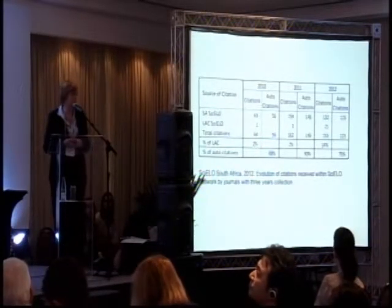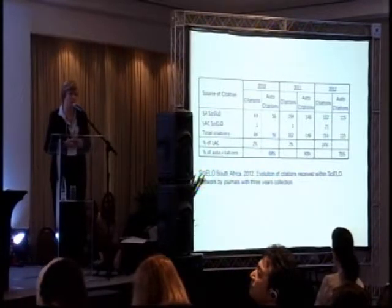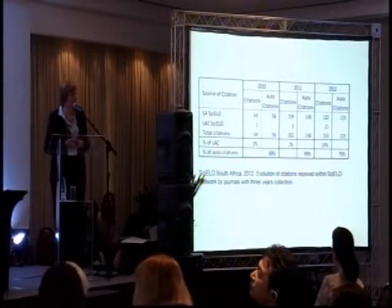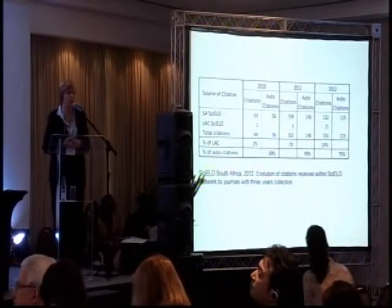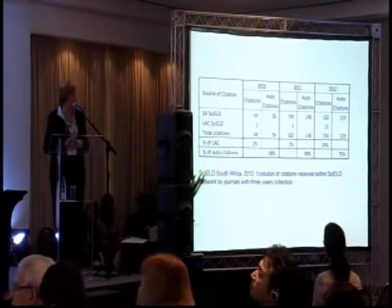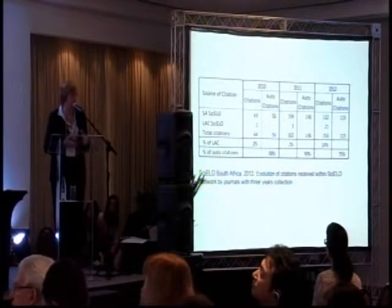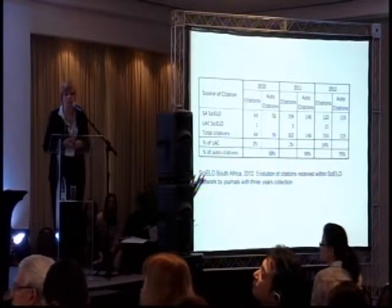This particular table gives us a completely different dimension to what is possible in this network. It shows us who in Brazil or in the Latin American context is citing South African authors and using their journals. What we haven't established yet is how many South Africans are actually using literature from the particular network. So we've got lots of work to do to analyze these statistics and understand the impact, the value, and the accessibility of all these journals.